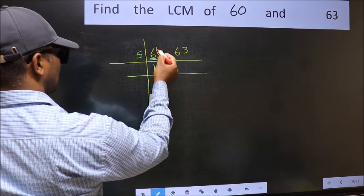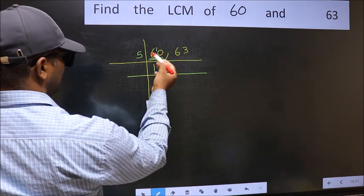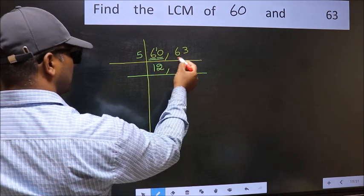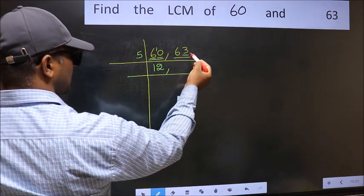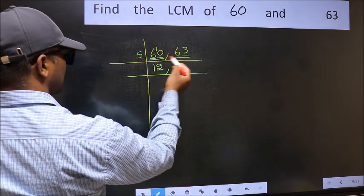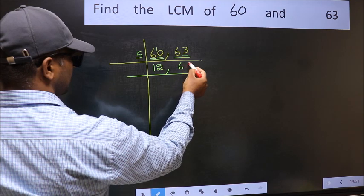6 minus 5 is 1, 1 carried forward 10. When do we get 10 in the 5 table? 5 twice 10. The other number, 63. Last digit is neither 0 nor 5, so this is not divisible by 5. So you write it down as it is.